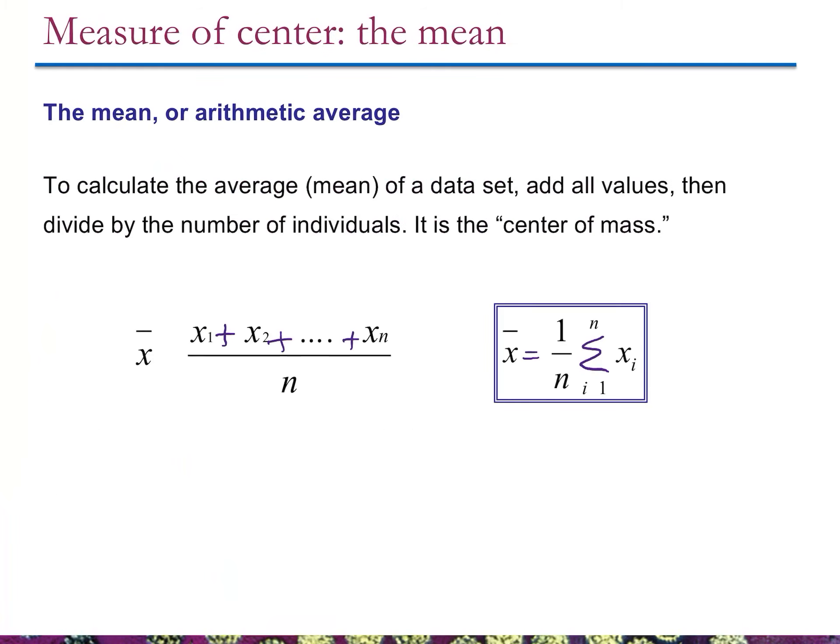Let's talk about the mean or arithmetic average first. In the PowerPoint the formulas show up just fine, but when I bring the PowerPoints up on my iPad it leaves out things — I had to write in the plus signs and the summation sign, for example. So that's just my handwriting; don't worry about it, these formulas are correct. To calculate the average or the mean of a data set it's very simple: all we have to do is add up all the individual data points and divide by how many data points there are.